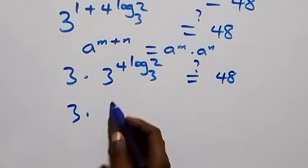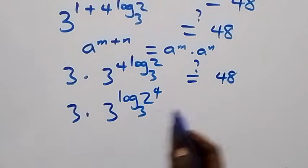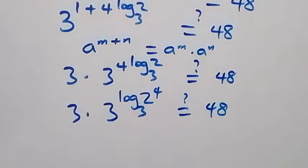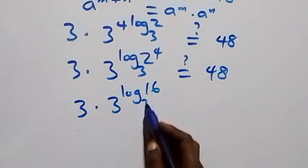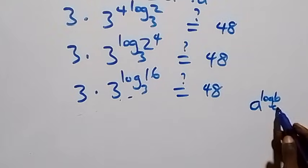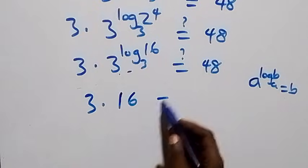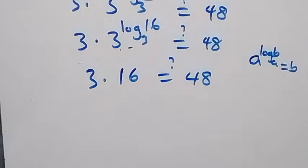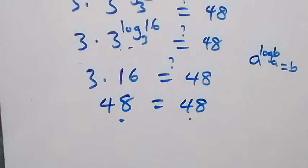Using the law a raised to power (n plus n) equals a^n times a^n, we get 3 times 3 raised to power (log 2^4 to base 3) equals 48. By the identity a raised to power log_a(b) equals b, we have 3 times 2^4 equals 3 times 16, which equals 48. The left-hand side equals the right-hand side, confirming our answer.